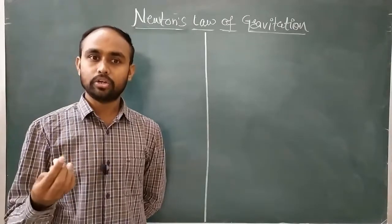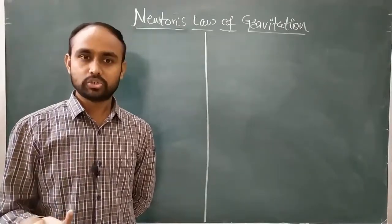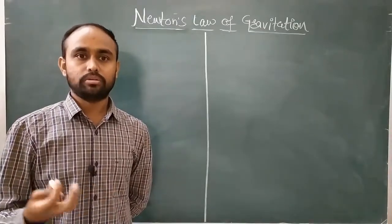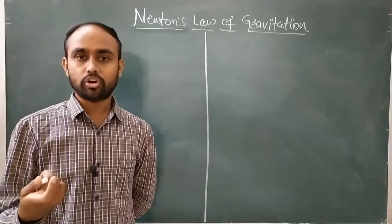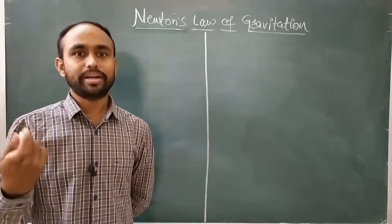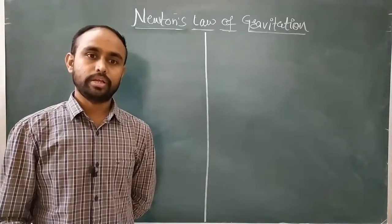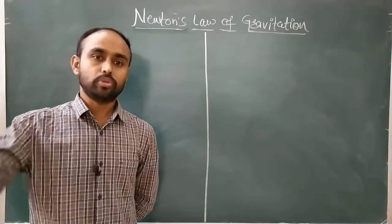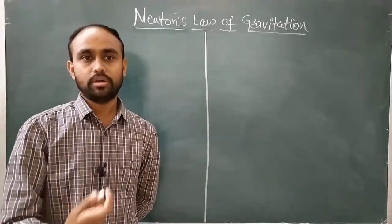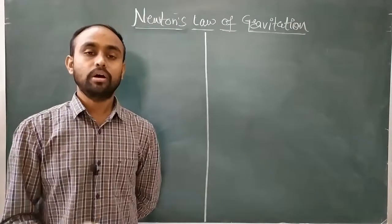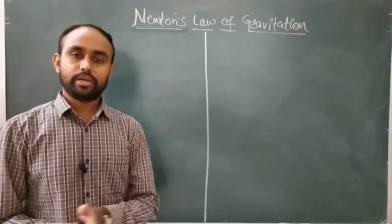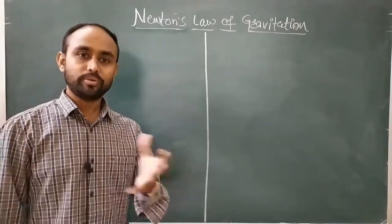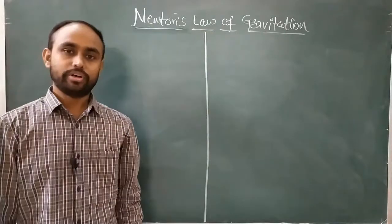Everybody has heard that apple tree story of Newton - maybe that is true or not, we do not know. But if it happened, that is what we can say the ignition of Newton's mind: how does that apple fall from the tree downward, why does it not go upward, why does it only come downward, why does it only fall on the earth's surface? That is the question that maybe arose in Newton's mind and he developed this law, Newton's law of gravitation.